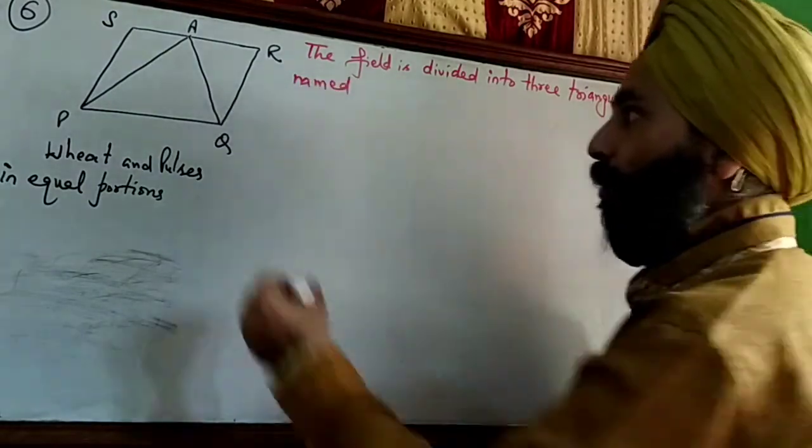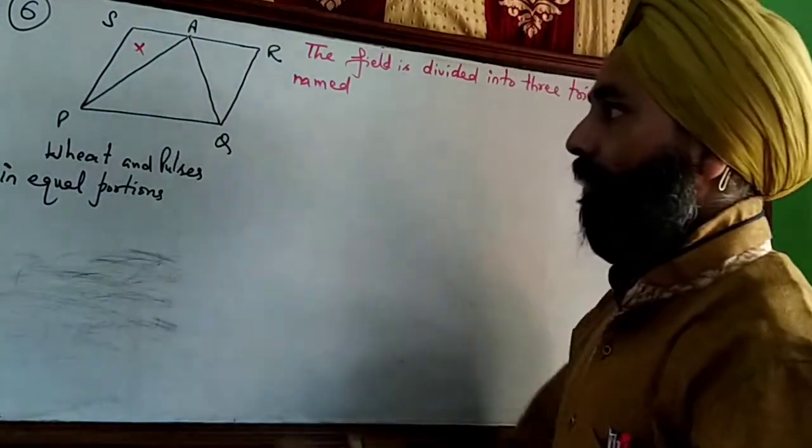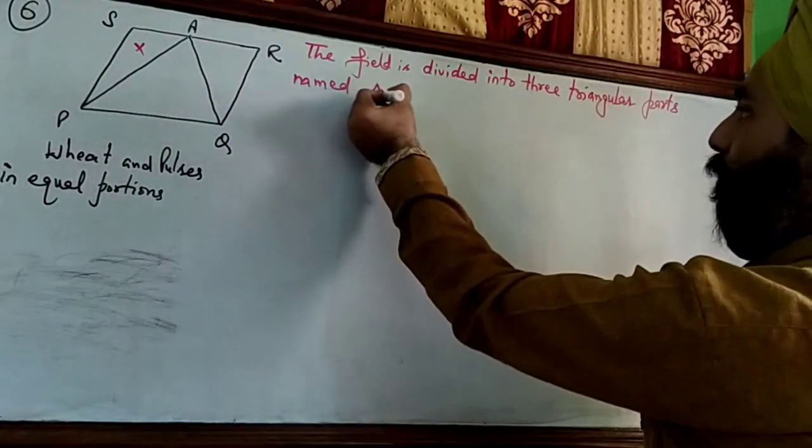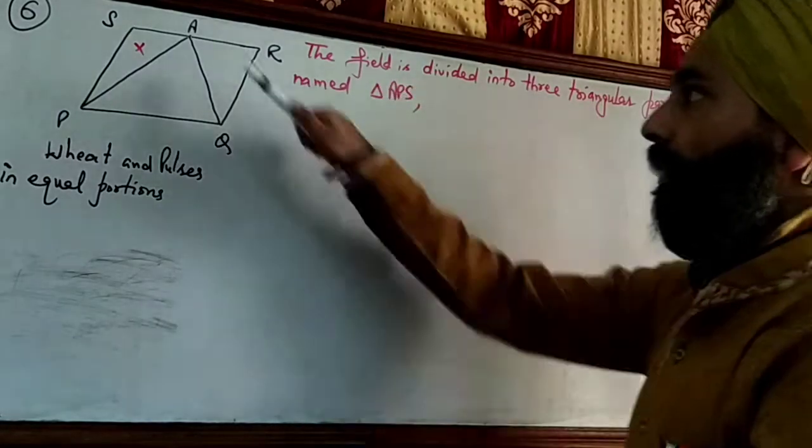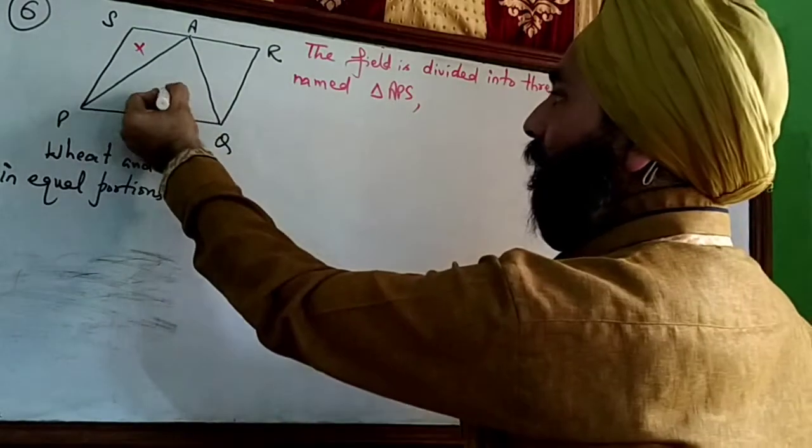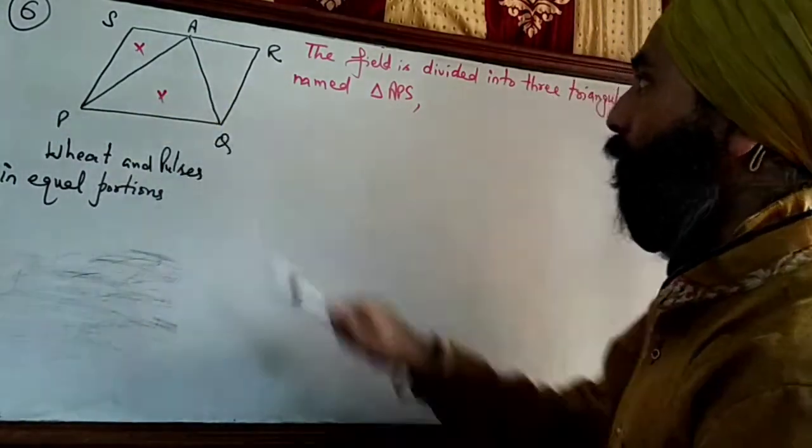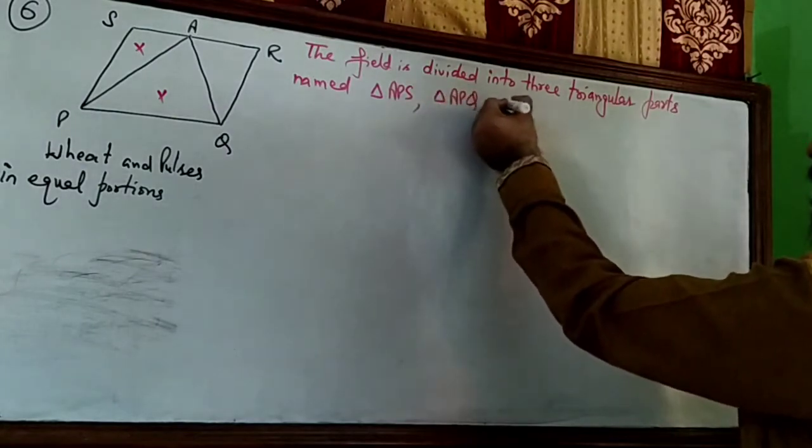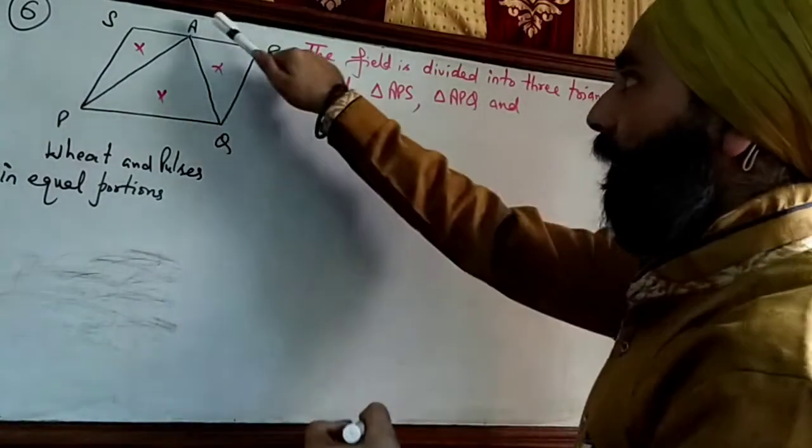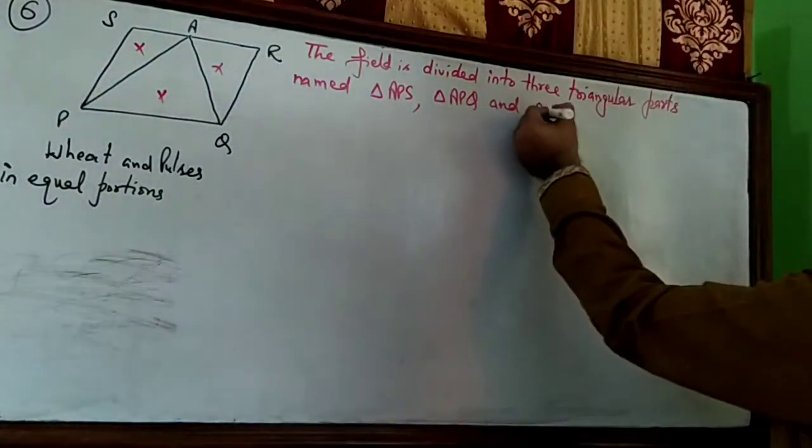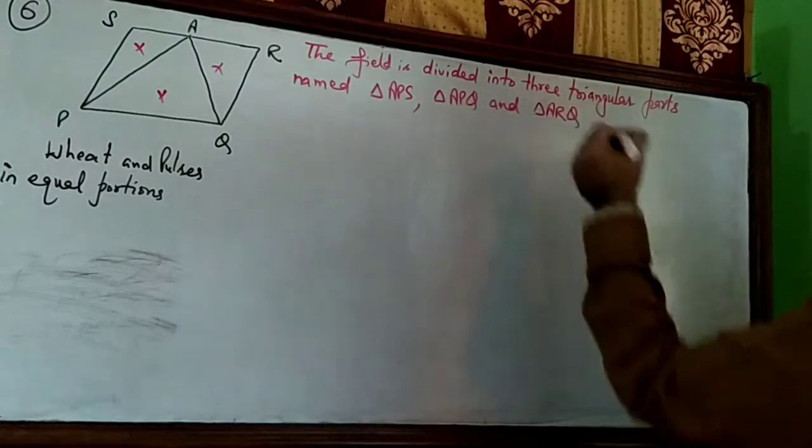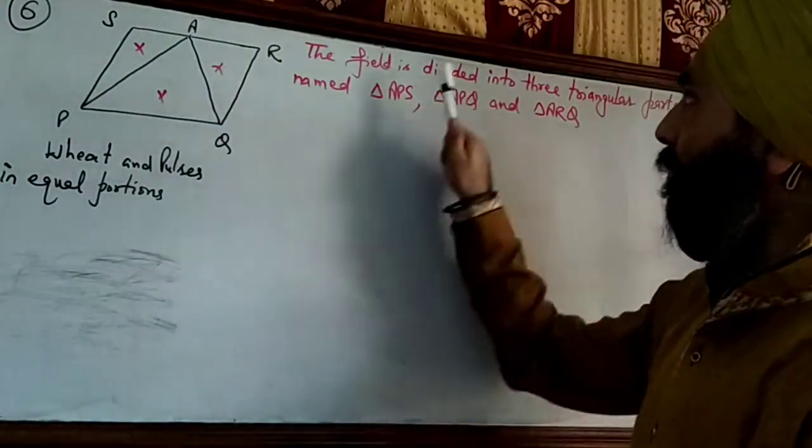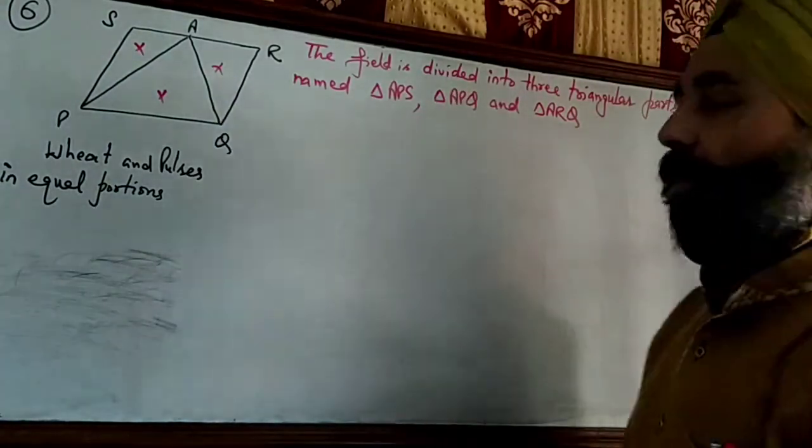One is this triangle APS, second one is triangle APQ, and third one is triangle ARQ. The answer is three triangular parts, and these are the names of the three triangular parts.